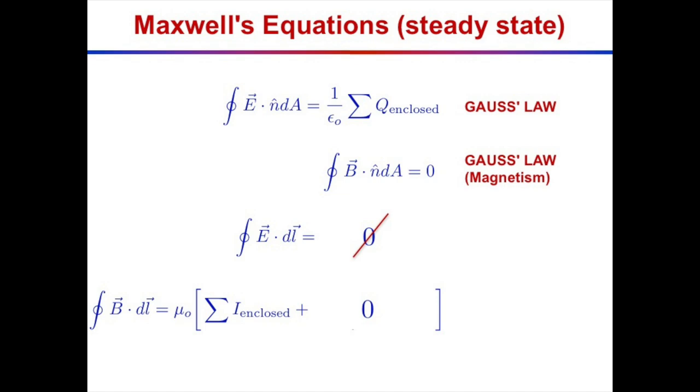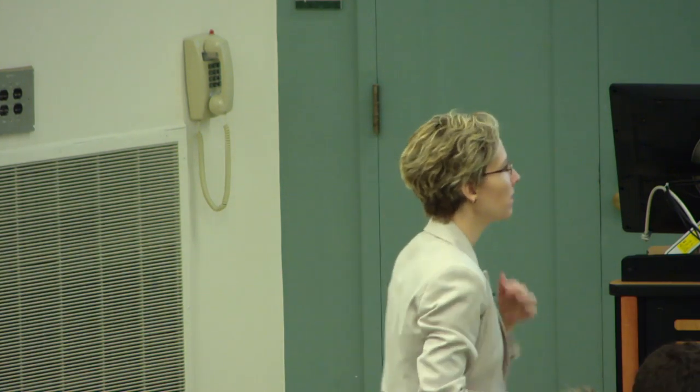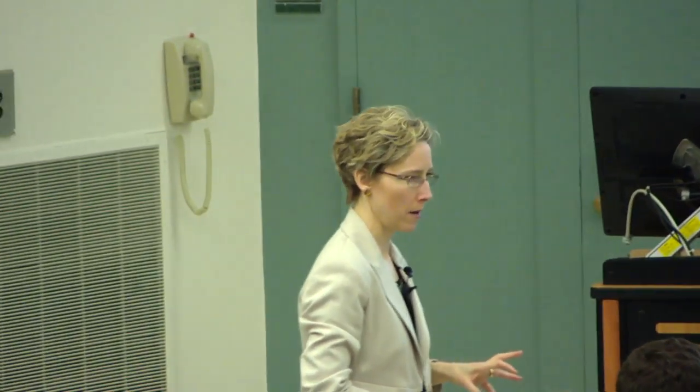Where there was a big fat zero in the steady-state equations, we're going to update. Last week in Chapter 23 we updated Faraday's law: a changing magnetic flux with time can cause a curling electric field - that's not a steady state piece, it has time dependence. Today we'll see that Ampere's law also needs to be updated: by analogy, maybe a changing electric flux causes a curling magnetic field.